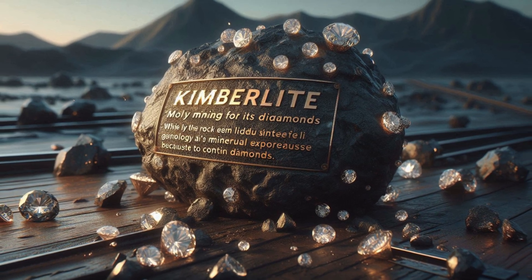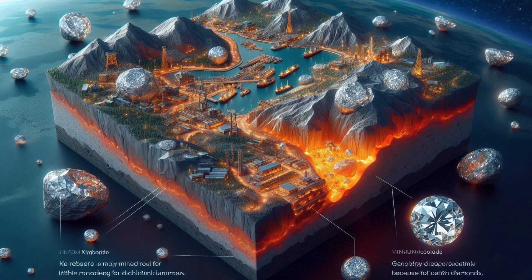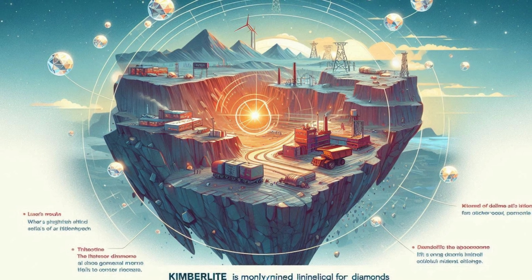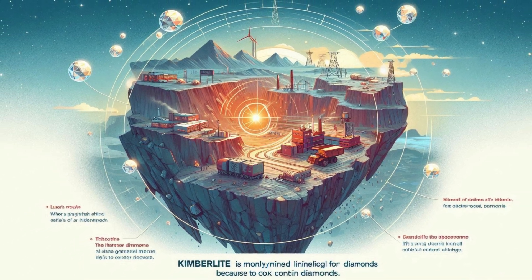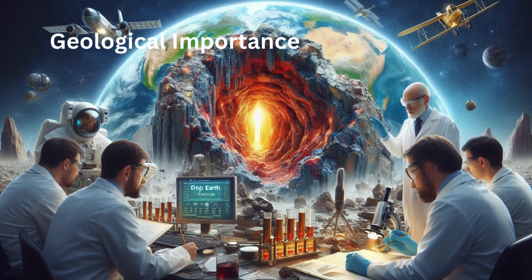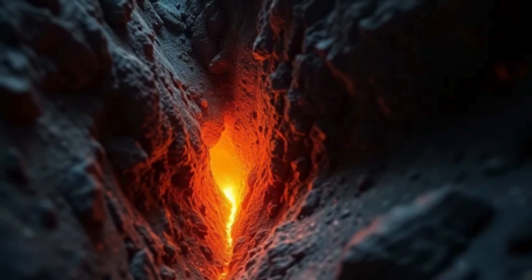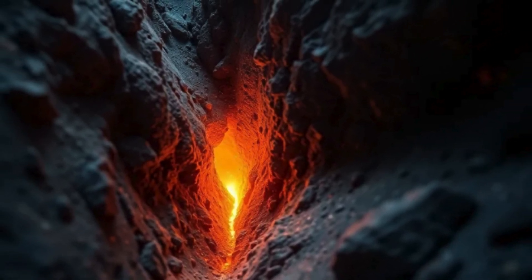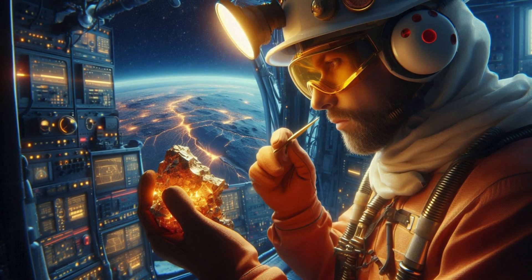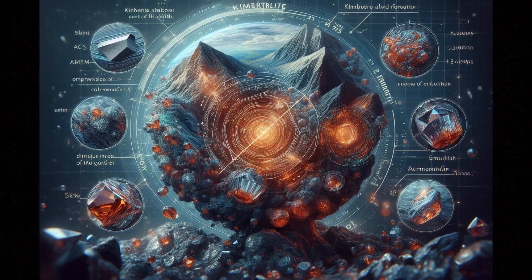Uses: kimberlite is mainly mined for its diamonds. While the rock itself has little industrial use, it's crucial in geology and mineral exploration because of its potential to contain diamonds. Geological importance: geologists study kimberlite to understand deep earth processes since it originates from such extreme depths. Kimberlite also holds information about the composition of the earth's mantle and helps scientists learn more about the conditions under which diamonds form.